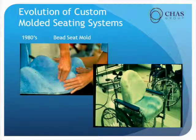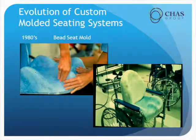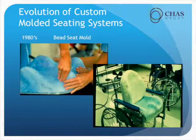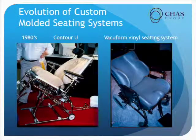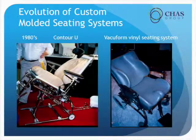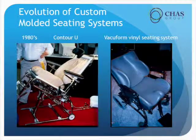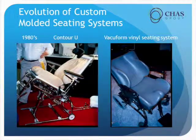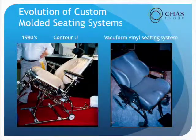Here's another type of custom mold seat they did in the 80s — it's a beaded seat. This was new to me when putting this presentation together. In the 80s, Contour U was developed, and one of the things — not only did they start vacuum forming both the mold and the foam and plastics, but they also started vacuum forming the vinyl which covered the foam. The blue you see is actually a vacuum form type of vinyl which we still use today.